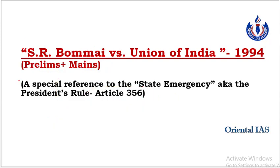Constituent assembly ke senior members ne yahan tak warn kiya tha ki India ka federal structure Article 356 ki wajah se khatre mein aa sakta hai. Dr. B.R. Ambedkar ne Constituent Assembly ko assurance diya ki ye article use hone ki naubat hi nahi aayegi - it would be more like a dead letter, only in extreme situations especially when India's integrity as a union of states is compromised. Us case mein is article ka use hoga.